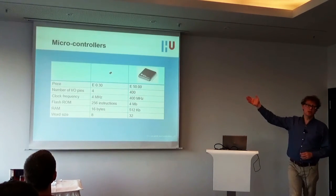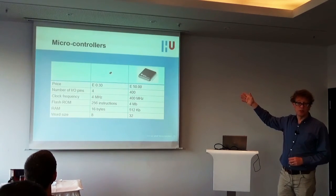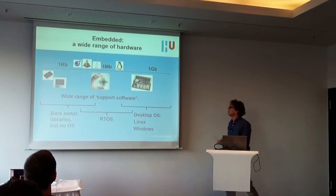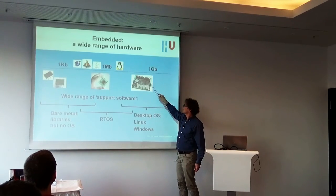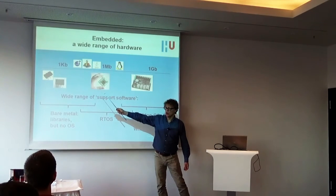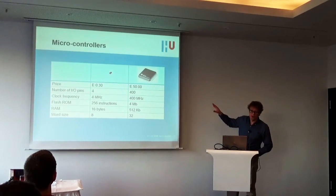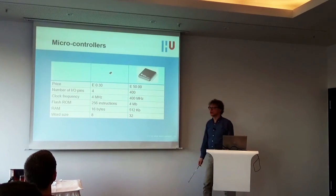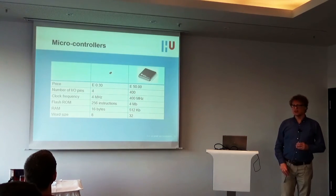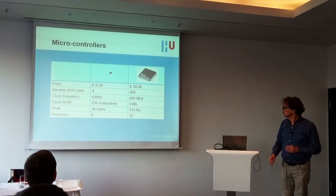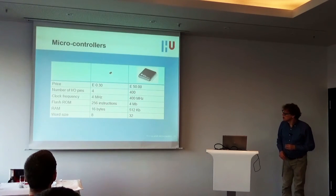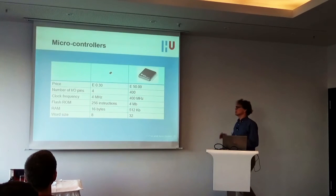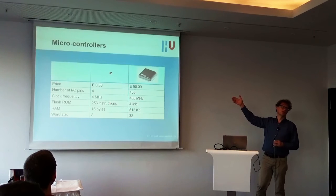Even within microcontrollers there's a wide variety. Price, number of IO pins — two orders of magnitude. Speed — two orders of magnitude. Size of instruction memory — eight or more orders of magnitude. Size of RAM — six orders of magnitude. So even when you're programming microcontrollers, you can be very different. What I mostly program is somewhere on the smaller side, not the very smallest but these kinds of things. Compare this with a desktop system — in word size or clock speed the difference is not that staggering, but in size of memory it is tremendous.